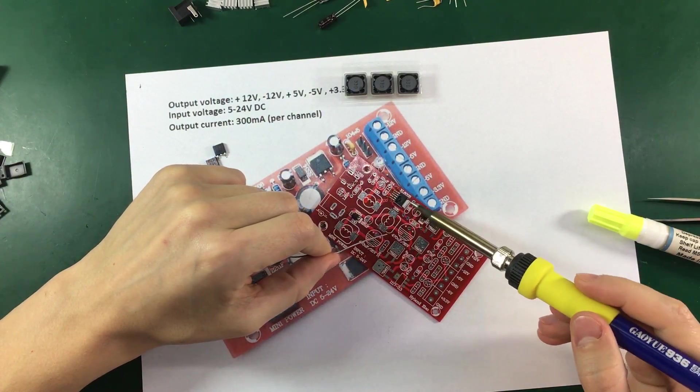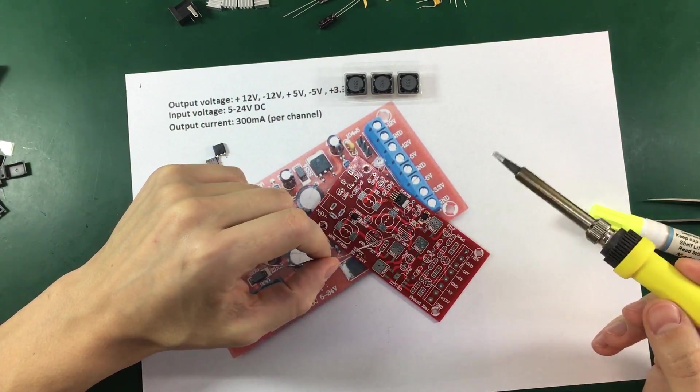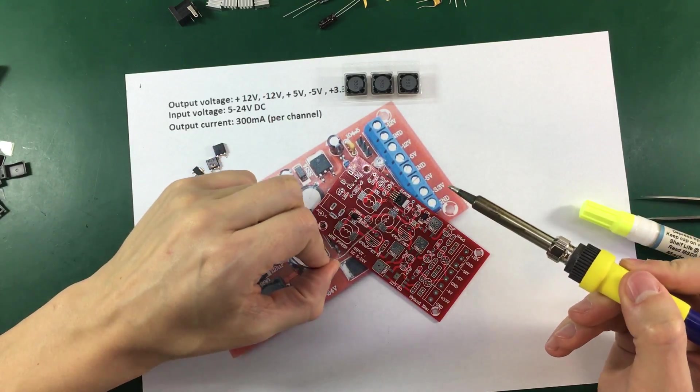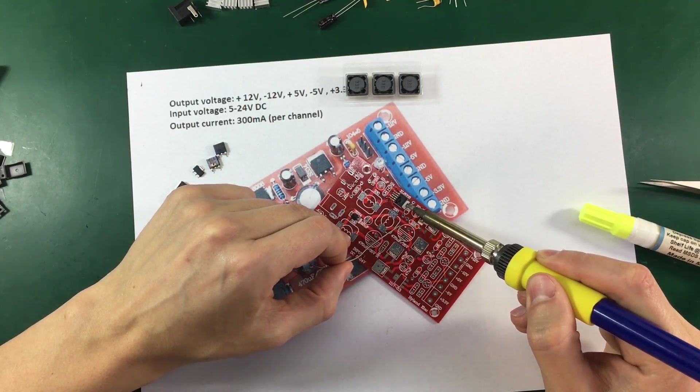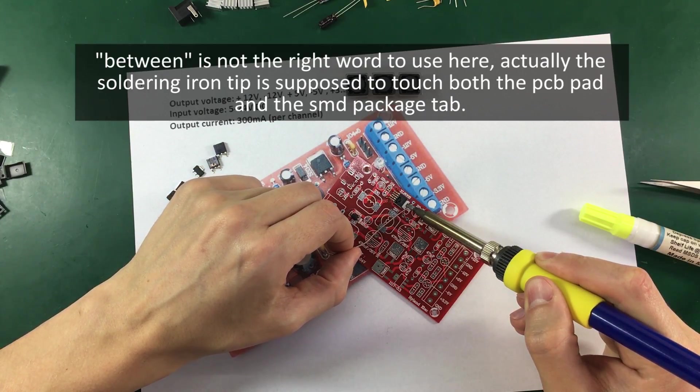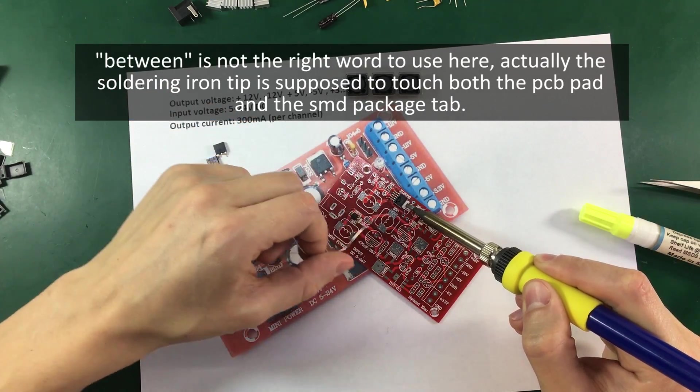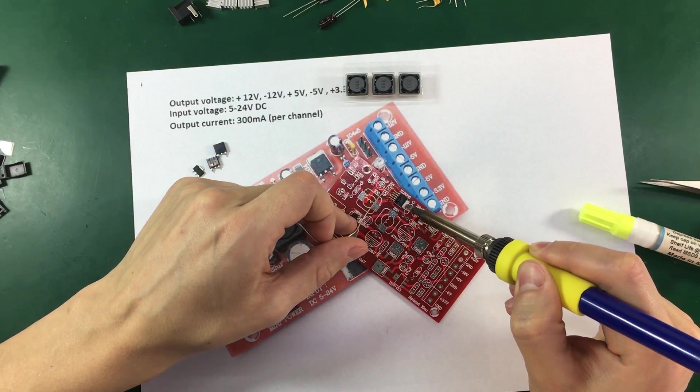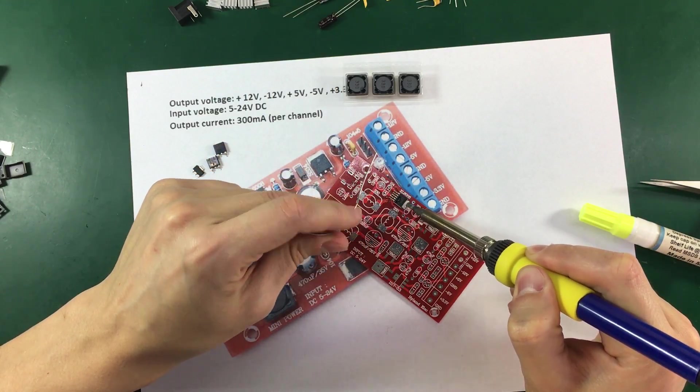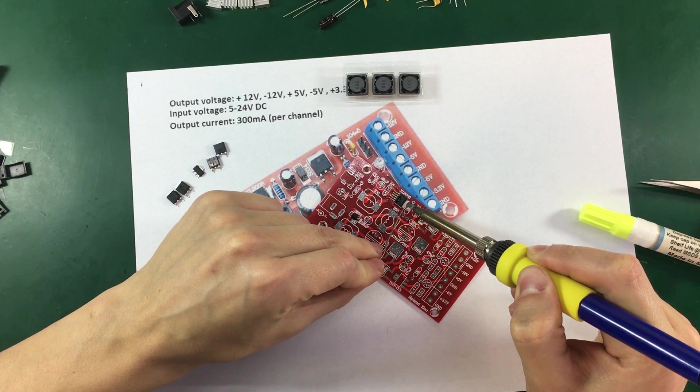And remember you also have to solder the tab of the package. And the way I like to do that is put the soldering iron right between the pad and the tab. So the pad is on the PCB, the tab is on the package. So I like to heat both of those with my soldering iron tip. And I'm just going to feed solder from the side.